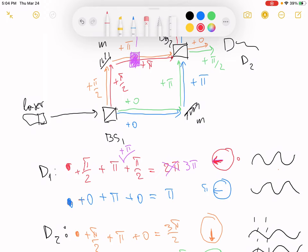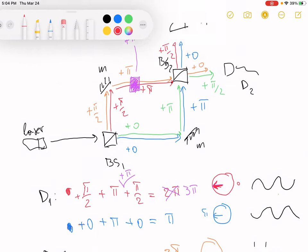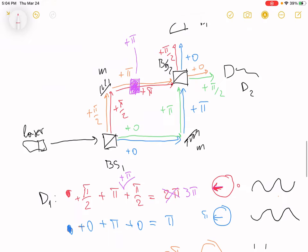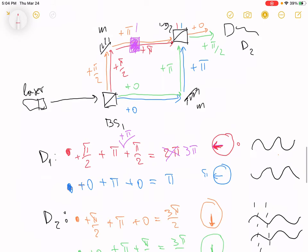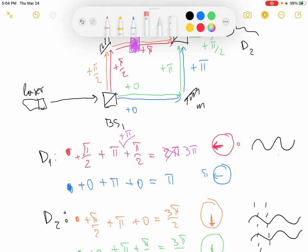You see that the blue path hasn't been affected by the piece of glass. The piece of glass only affects the red path. And the blue path isn't affected, so now we have 3pi, constructive interference here. So the waves are not anymore out of sync, they are in sync.